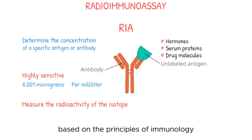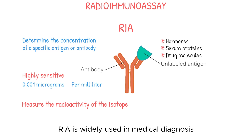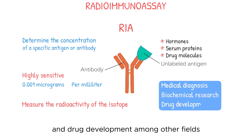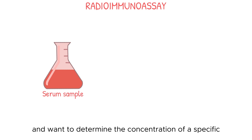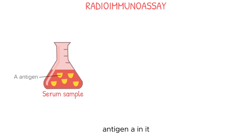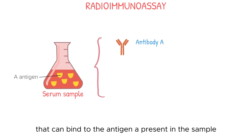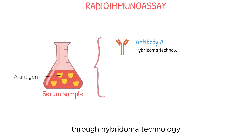Based on the principles of immunology and radioactive measurement, RIA is widely used in medical diagnosis, biochemical research, and drug development, among other fields. Assuming we have a serum sample and want to determine the concentration of a specific antigen A in it, we need three things. The first is a monoclonal antibody A that can bind to the antigen A present in the sample. These antibodies are typically prepared through hybridoma technology.